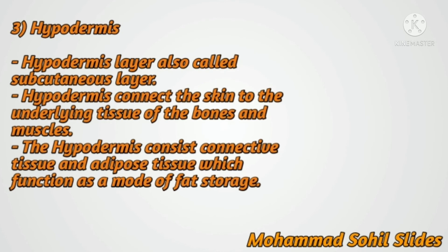The third layer of skin is the hypodermis, present below the dermis, also called the subcutaneous layer. The hypodermis connects the skin to the underlying tissue of the bones and muscles. It consists of connective tissue and adipose tissue, which functions as a mode of fat storage.